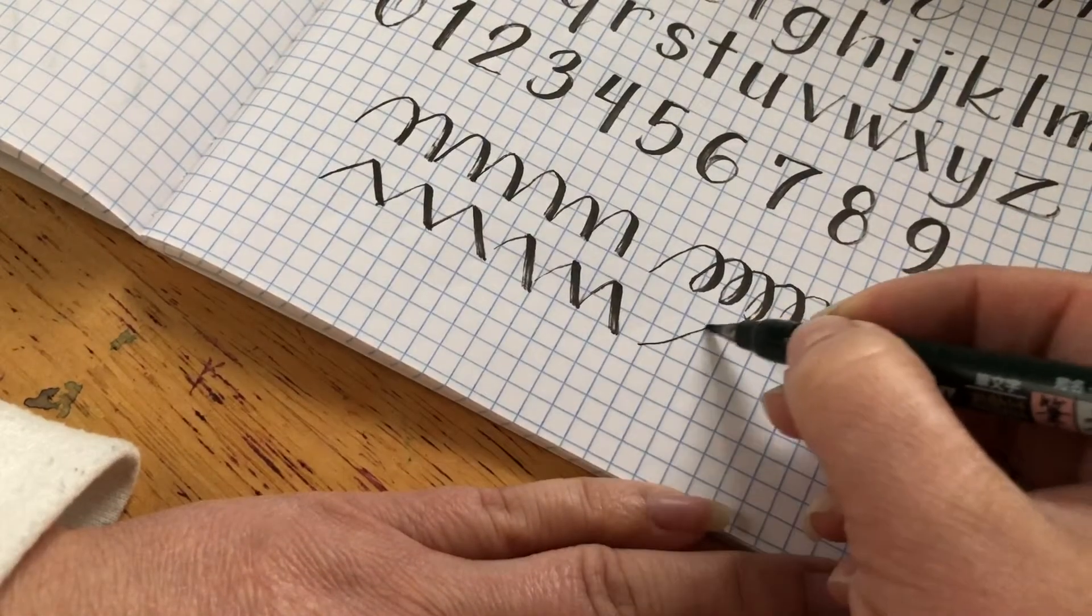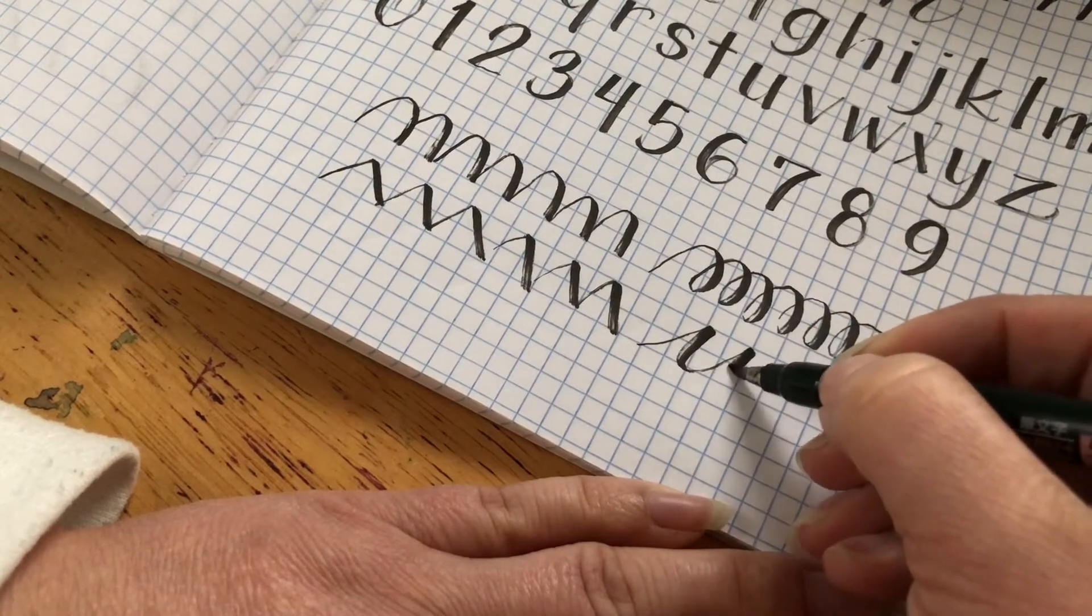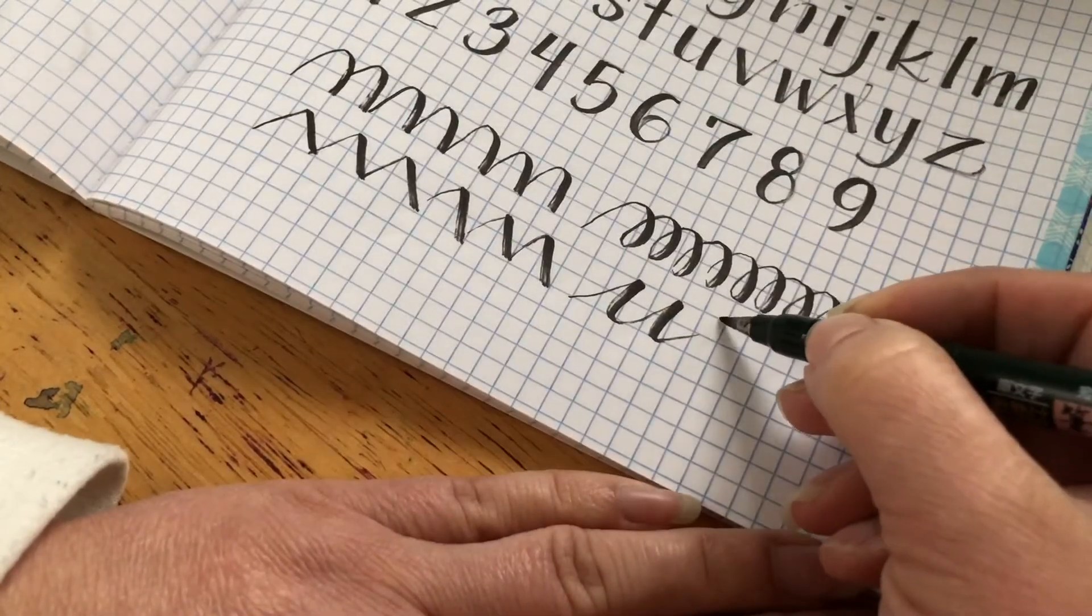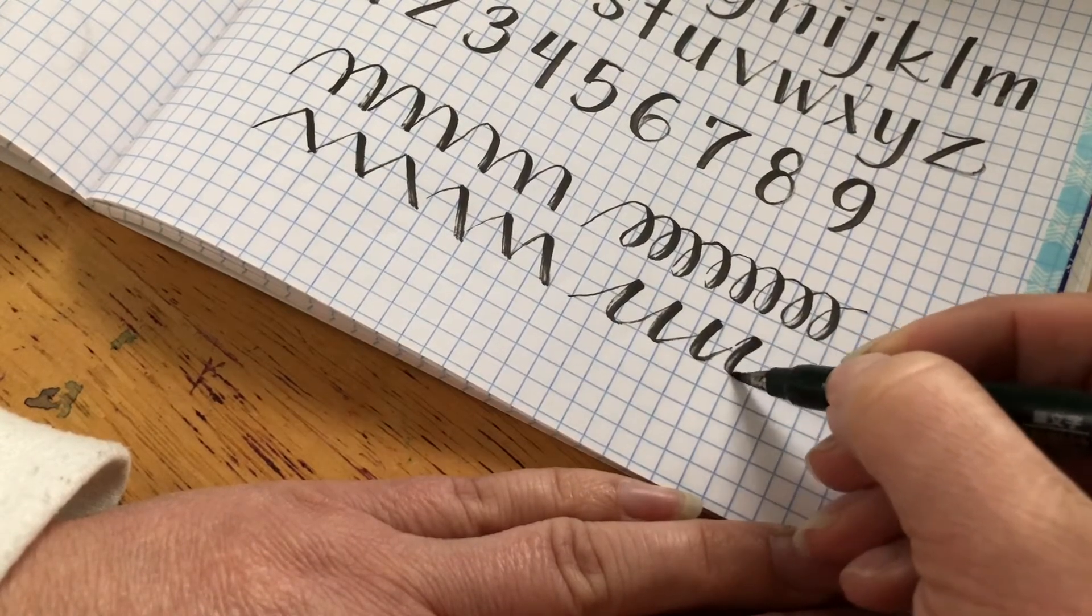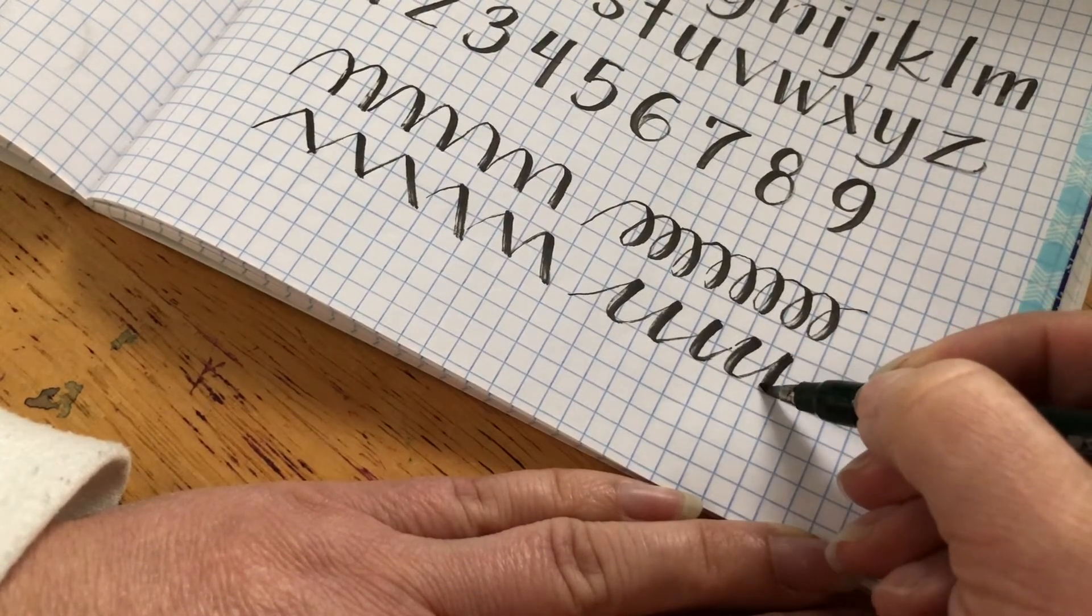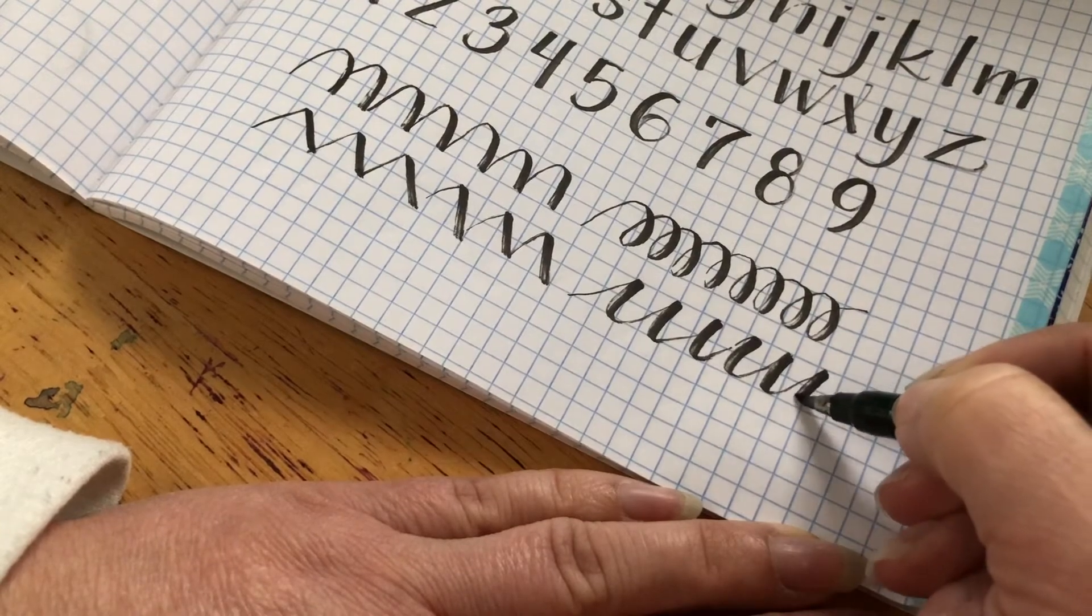Keep in mind that the Fudenosuke pen is considered a disposable pen and it's not going to last forever. The more you use it, the nib will fray. I tend to like the texture that it gives and I use these pens all the way up until they stop working.